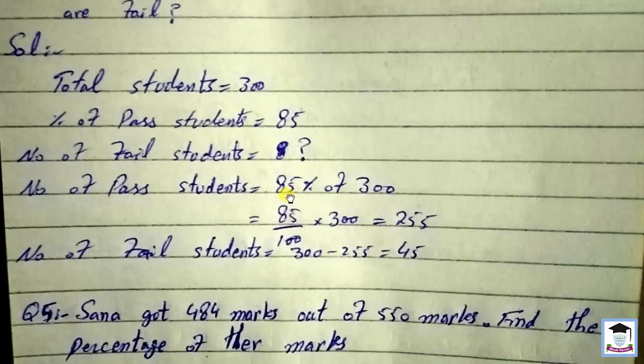Number of passed students: 85 percent of 300. Multiply 85 by 300, divide by 100. This gives 255 students passed. Number failed: 300 minus 255 equals 45 students failed.